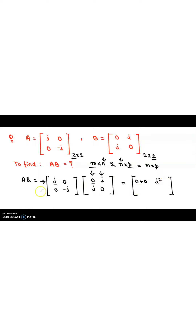For the third entry, we take the second row of the first matrix and the first column of the second matrix: 0×0 = 0 and -I×I = -I². For the fourth entry, we take the second row of the first matrix and the second column of the second matrix: 0×I = 0 and -I×0 = 0, so this entry is also zero.